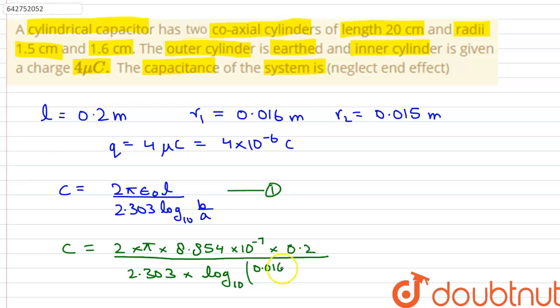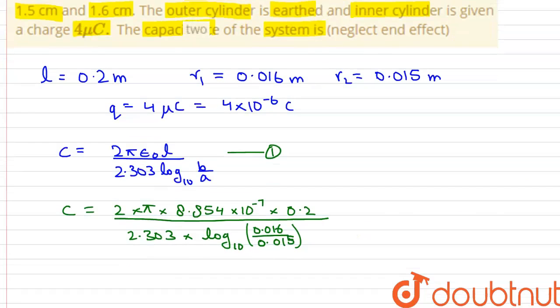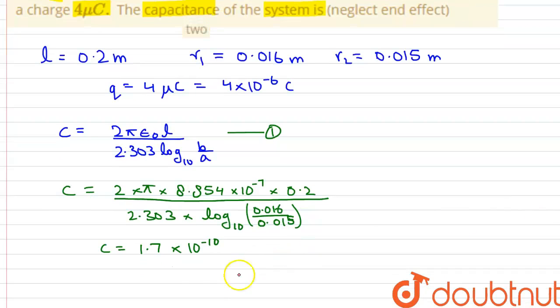0.016 divided by 0.015. And on calculating this value comes out to be C equals 1.7 × 10^-10. Therefore, on calculation we can say that the capacitance of system is C, which is equals to 1.7 × 10^-10 farads. Thank you.